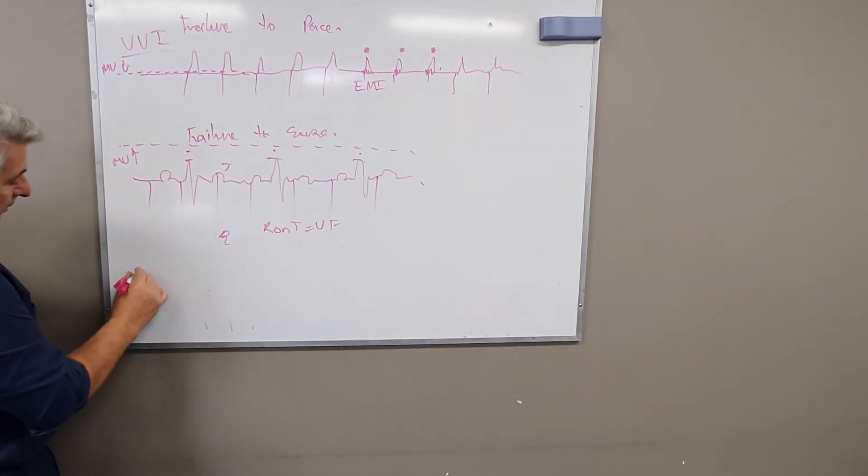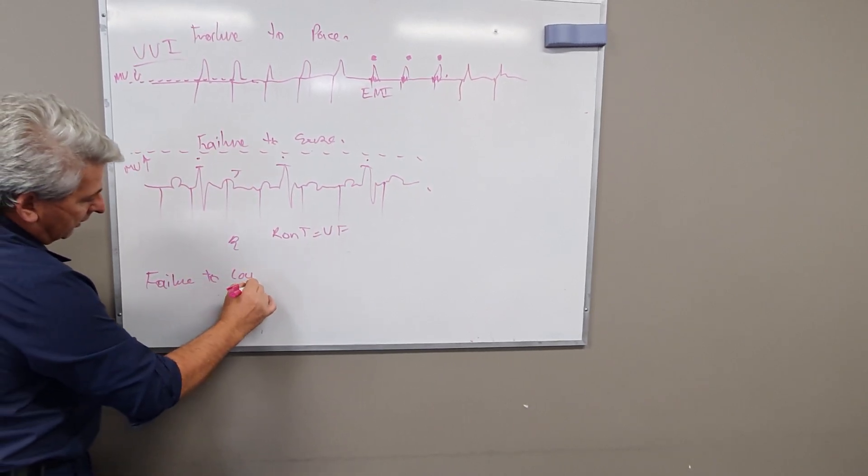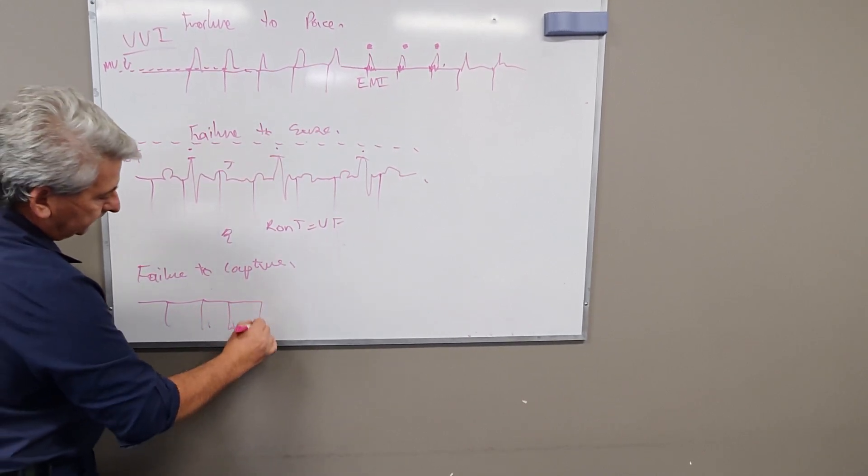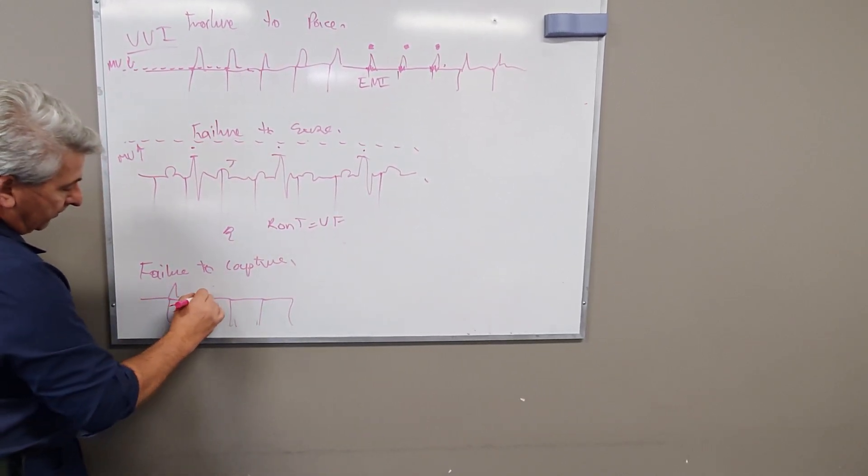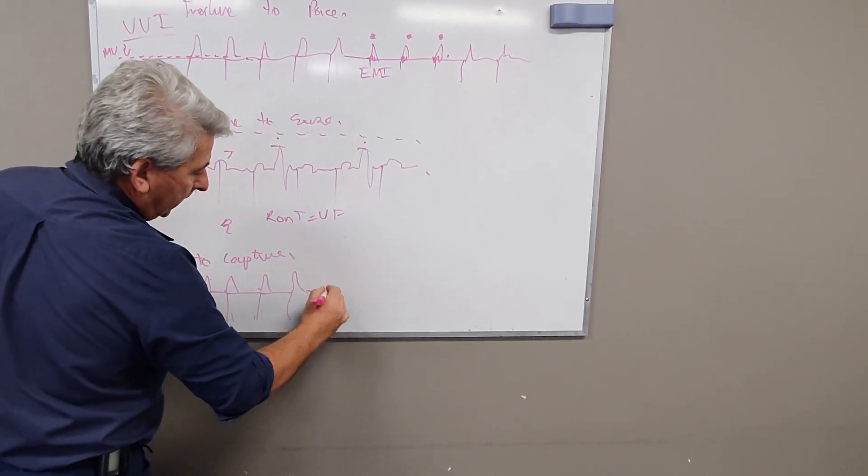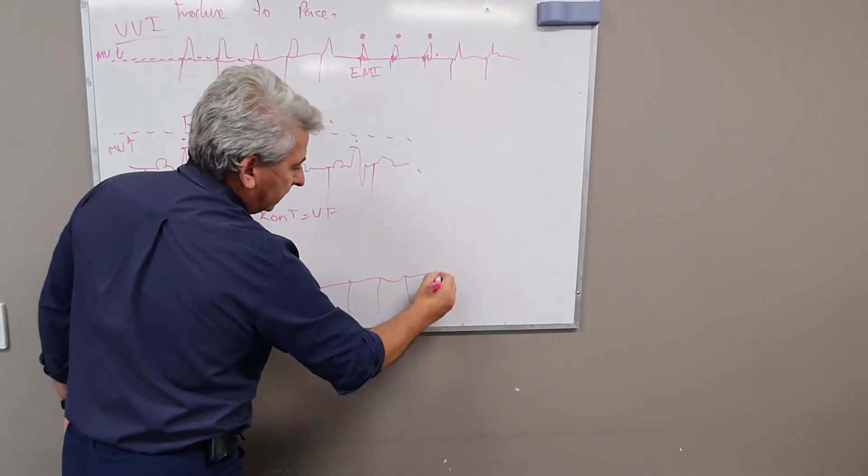The next one, and the last one, is failure to capture. All failure to capture is not enough output. So you've got these pacing spikes happening, and they're followed by a mechanical capture, and you've got pacing spikes then with no mechanical capture, and let's say they start again.